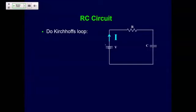I'll call my current to be going this way. If I do my sign convention like we normally do, I'll get this here. Now as I'm charging up the capacitor, this side will get positive and that side will get negative. What happens is the electrons leave this side and come over to where the positive is, and then electrons are attracted over to here. That's the sign convention for this circuit.